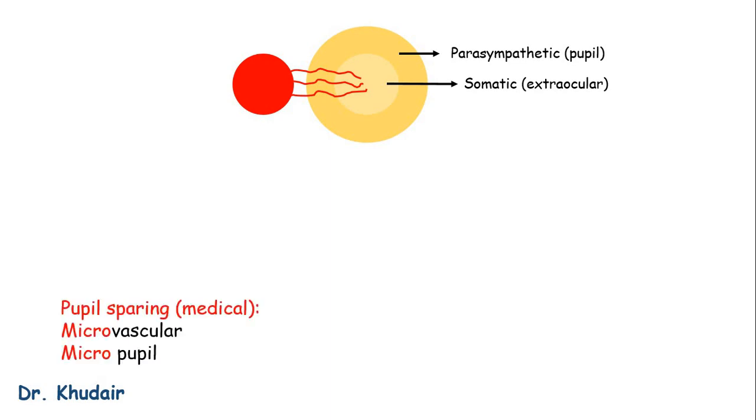So if the pupil is spared, this is due to microvascular disease like diabetes or hypertension, which will affect the vasa nervorum.